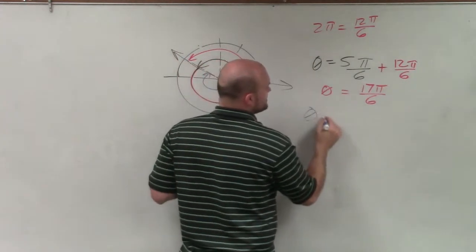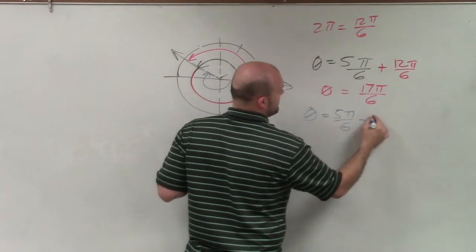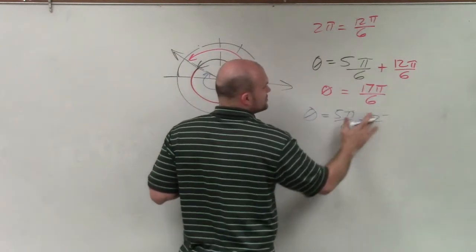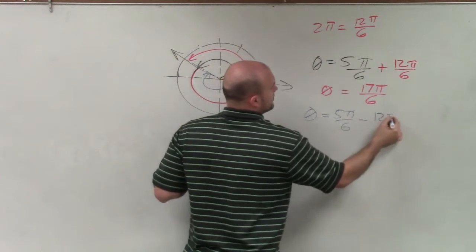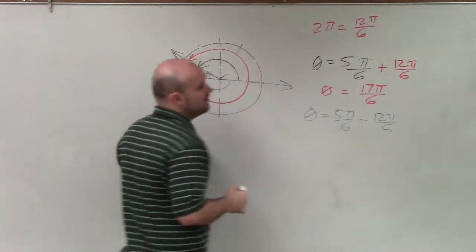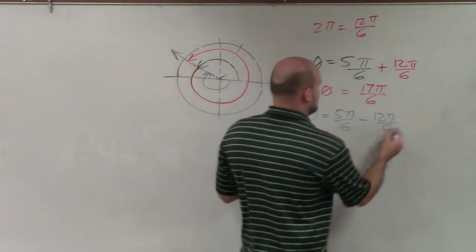So to represent this, I just take 5π over 6 minus 2π, which we know is 12π over 6. So now, I go ahead and subtract those.